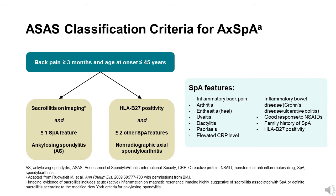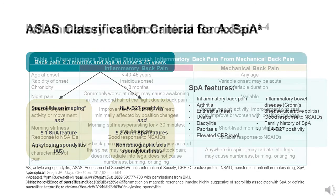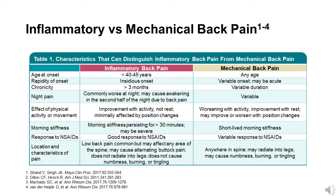Clinical judgment is considered the criteria standard for diagnosis of AS and axial spondyloarthritis. The hallmark feature of axial spondyloarthritis is inflammatory back pain, which is characterized by insidious onset of chronic pain lasting more than three months before the age of 40 to 45 years. Patients usually wake up in the second half of the night due to back pain. The pain improves with physical activity but not rest, associated with morning stiffness persisting for more than 30 minutes, and usually has a good response to non-steroidal anti-inflammatory drugs.